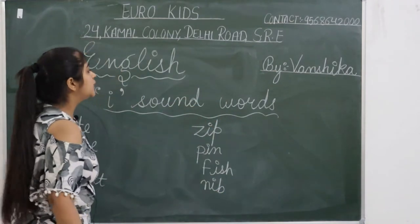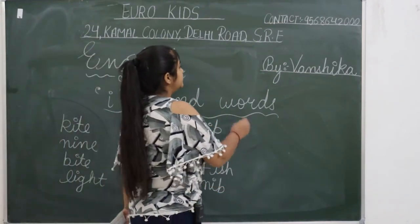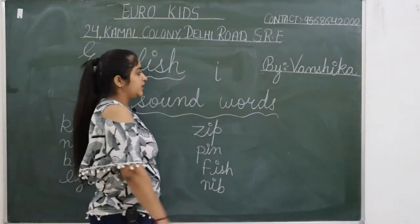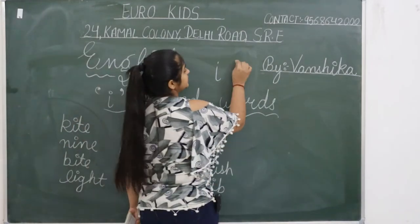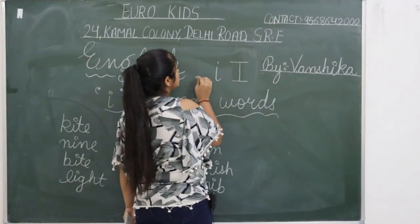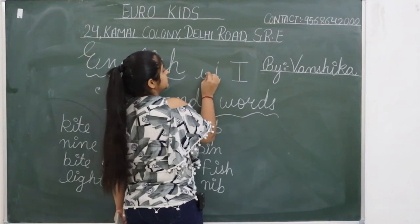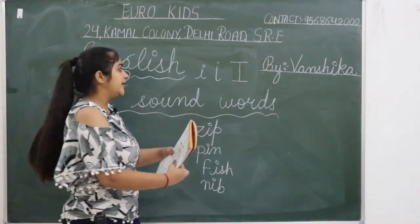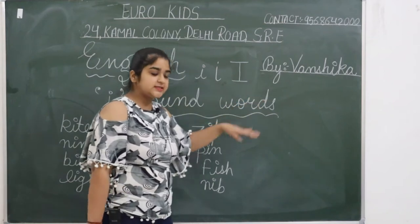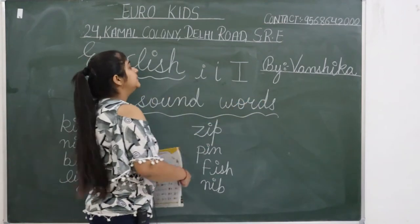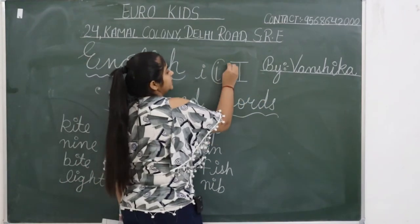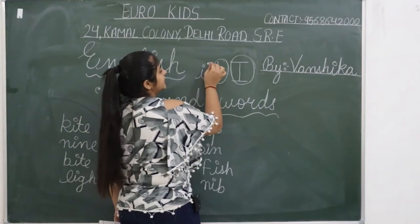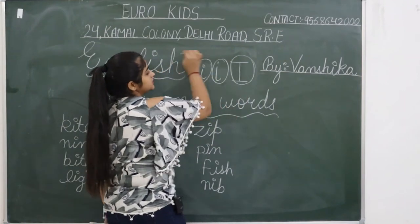What is in I sound words? We will write it like I. In small letter, I is like this. In big letter, I is like this. And in cursive, I is like this. We can write it in a small letter, in a capital letter, and in a cursive letter.